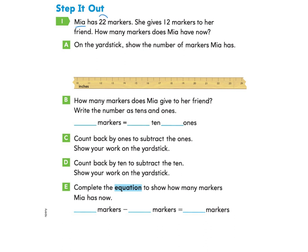Mia has 22 markers. She gives 12 markers to her friend. How many markers does Mia have now? So this is going to be a subtraction problem because we're seeing the word she gives something away. She has something and then she gives something away. Now let's take a look at part A. On the yardstick, show the number of markers Mia has. If you want to pause and try this part on your own and come back, you may do so, or just follow along with me.